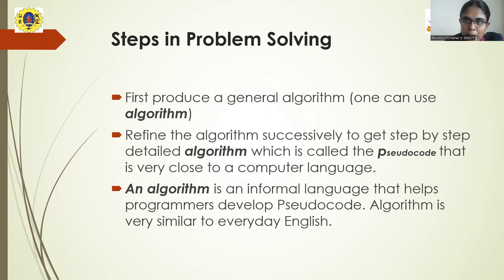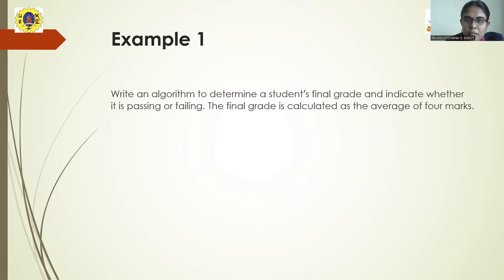Algorithm is an informal language, so everyone would be able to understand what an algorithm is about to say. But pseudocode can be easily interpreted only by the programmer. Let us take the example of determining a student's final grade given four marks. The student's grade is determined by calculating the average of the four marks.